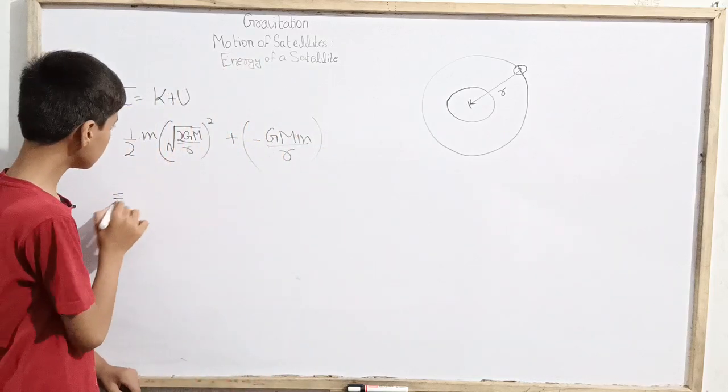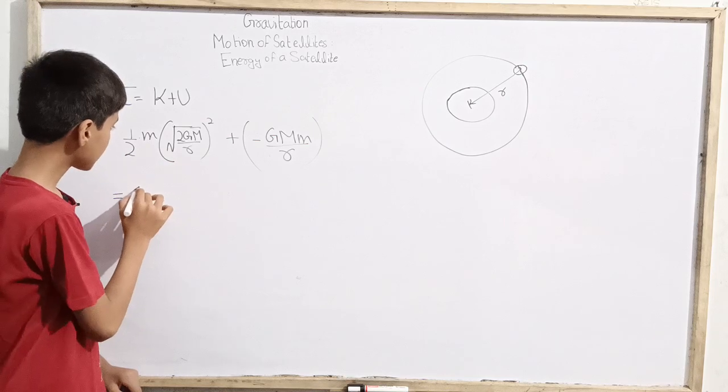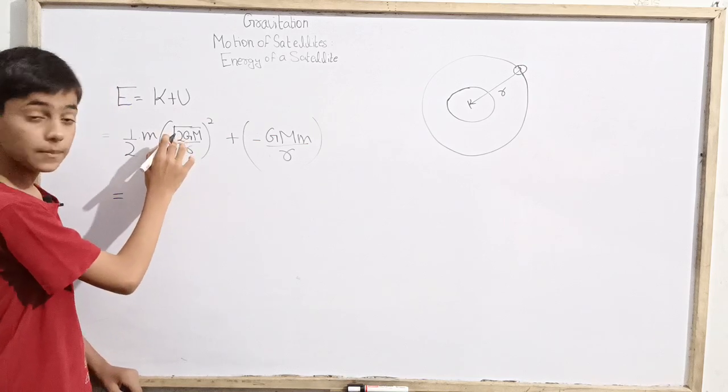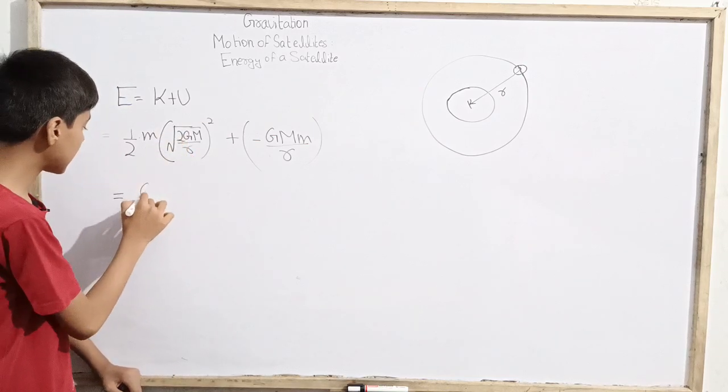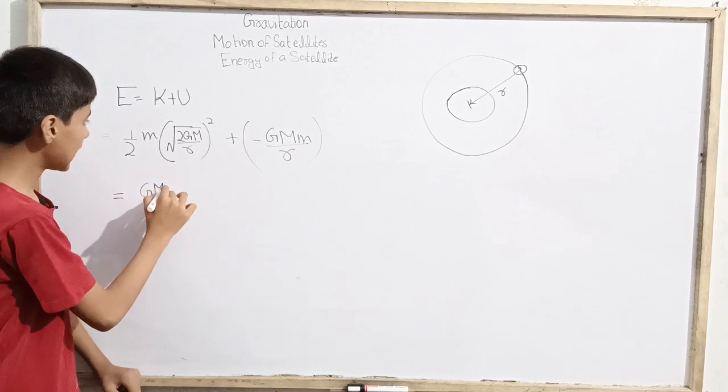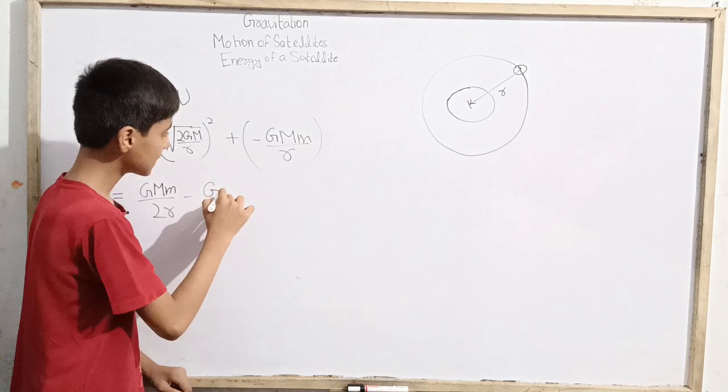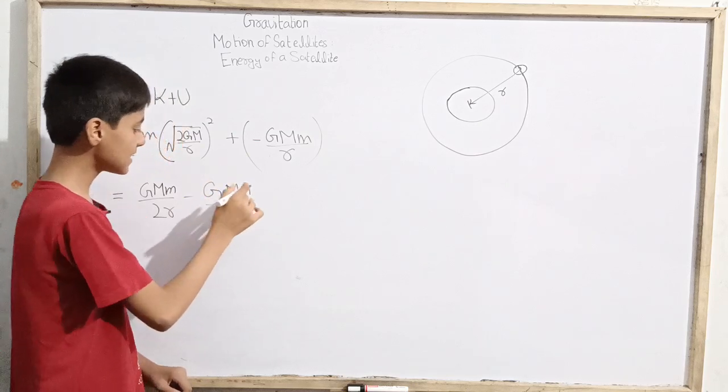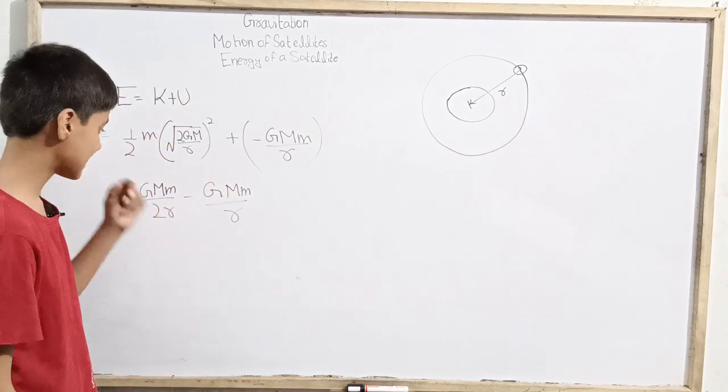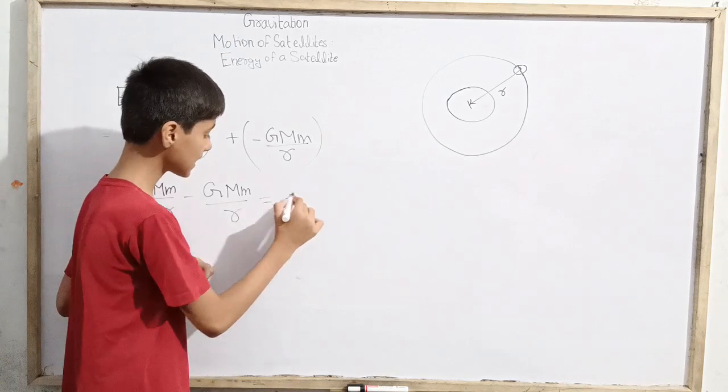So if we look at this, this becomes R, this will be square, so the root right here cancels. We get GM over 2R minus GMm over R. Since this term is greater than this, you can just say that the answer will be of course negative.